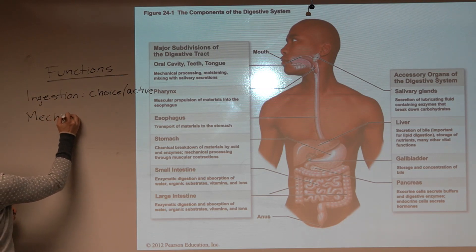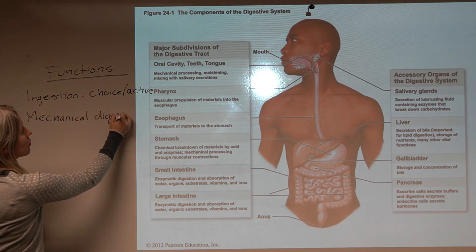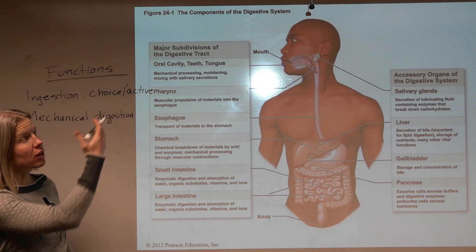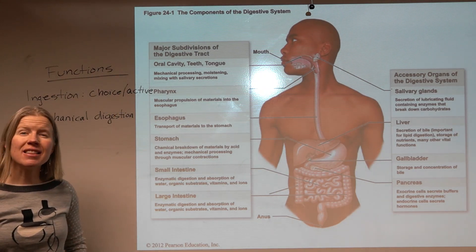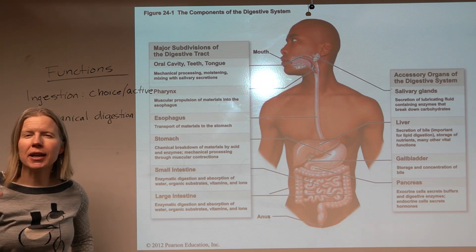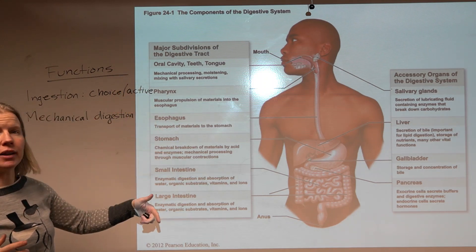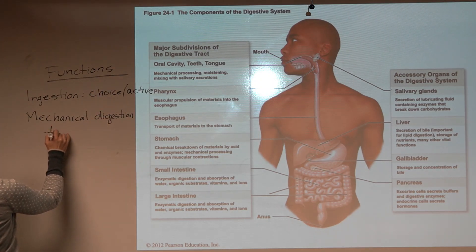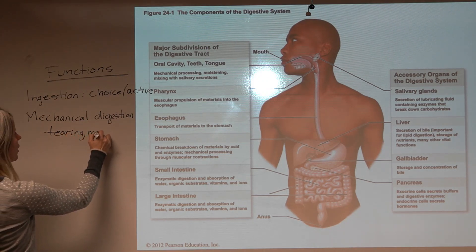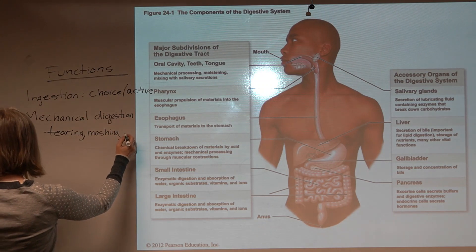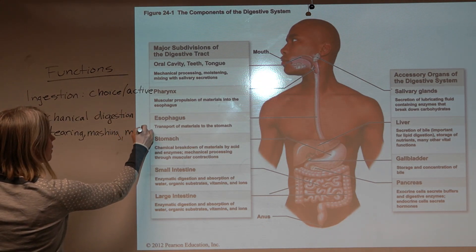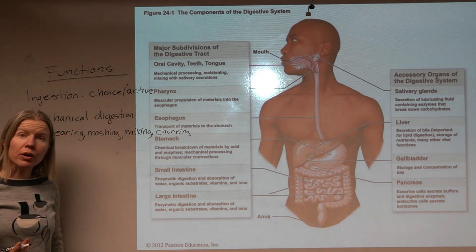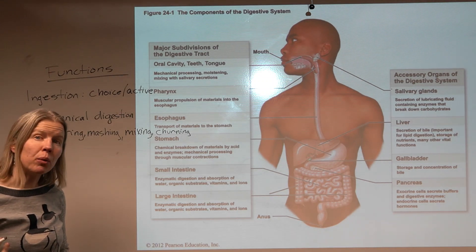We also do mechanical digestion, and this is going to occur in lots of different locations. This is all the tearing, chewing, mashing, and grinding that takes place along this tube. By the time you're in the stomach, there's lots of mixing and churning. This is important in the breakdown of that food to get to the point where it's small enough to absorb.